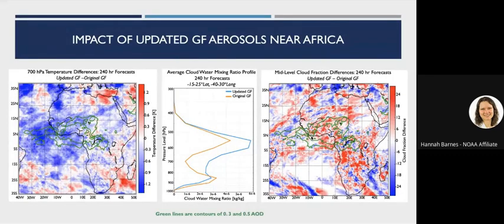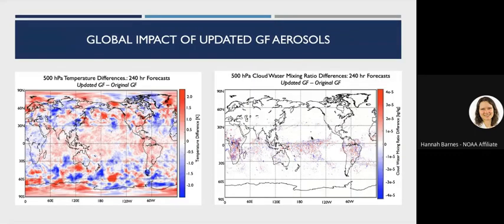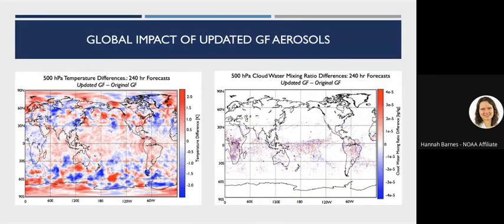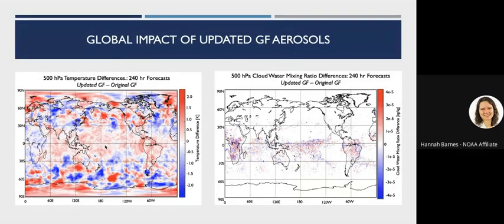Looking at the entire globe, we do see some global impacts of these changes. The 500 hPa temperature differences show quite consistent warming in the tropical Pacific and Indian Ocean. This may also be related to changes in autoconversion — the cloud water mixing ratio differences show more red areas in the tropics, suggesting more cloud water. At 500 hPa, especially in the tropics, we're near or at freezing, so there may be more freezing, more latent heat release, contributing to the warming. The caveat is that this is still relatively preliminary work.